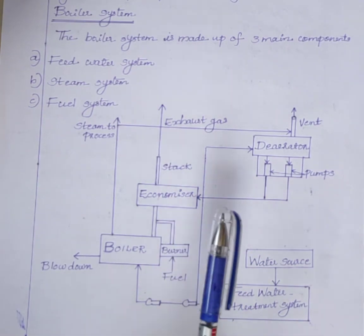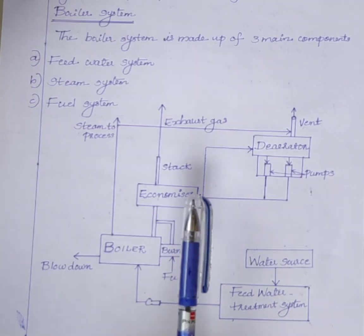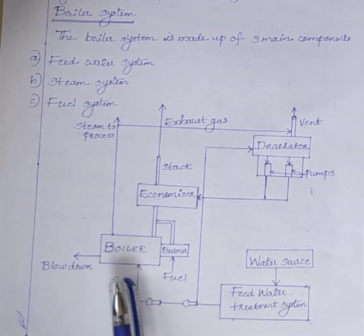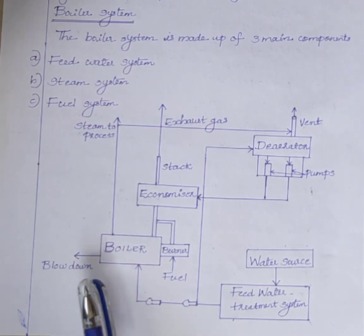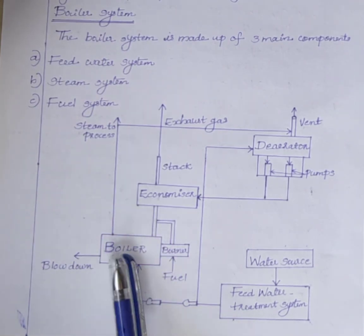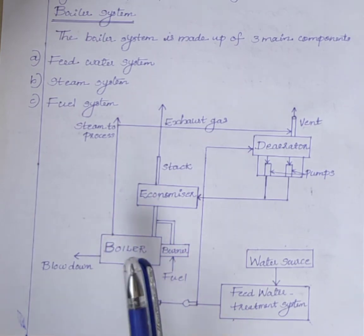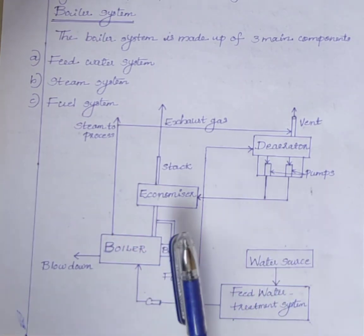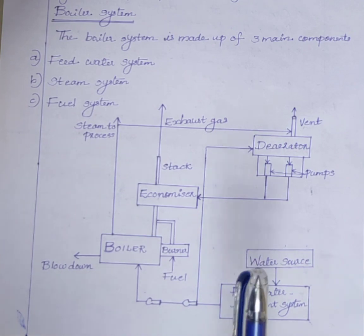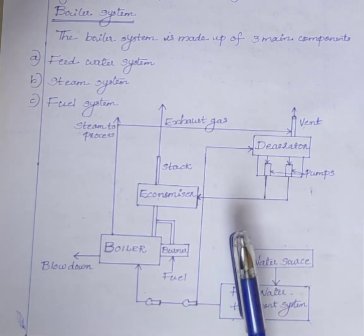In the boiler system, an economizer is used along with the boiler to capture the heat from the flue gases and transfer it into the feed water. Therefore it is used to preheat the boiler feed water. A blow down process is used to avoid concentration of impurities inside the boiler. These are the main components in the boiler system. Thank you.